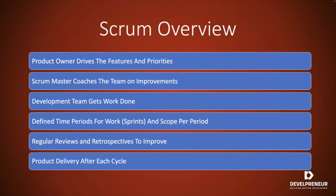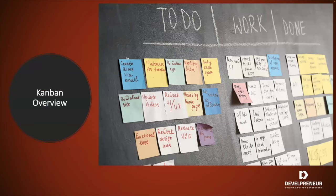With Scrum, you have defined periods of work called sprints, and a certain scope of work goes into each period. In a two-week sprint, you define what items you're going to target getting done during that sprint. As you wrap up each sprint, you have a review to see how you did, and retrospectives to see how you can do better. And ideally there's some sort of product delivery after each cycle — putting something in front of a customer and saying, hey, we've got some new features, give us your feedback while we keep moving forward.